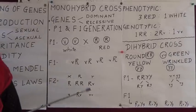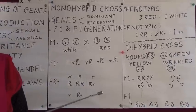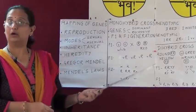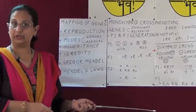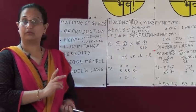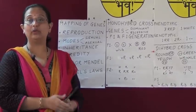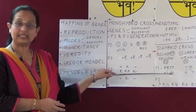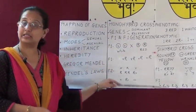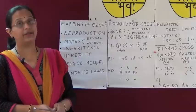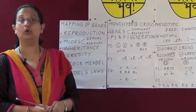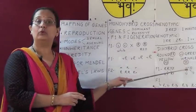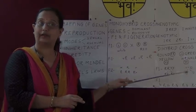We have studied the monohybrid ratio, which shows the crossing of only one pair of characteristics, as demonstrated by Gregor Mendel. In the next session we shall study about the dihybrid ratio, which shows the crossing of two pairs of characters.